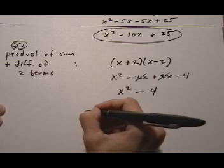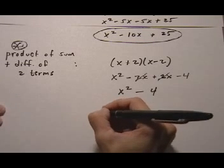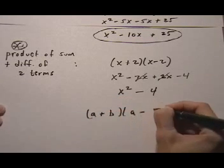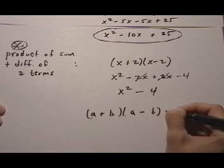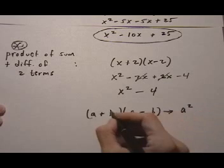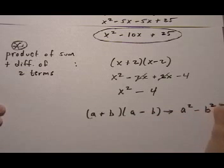What you end up with is the first term squared take away the last term squared. So the formula worth memorizing: (a + b)(a - b) = a² - b². The first term take away the second term squared.